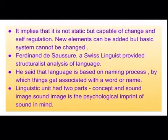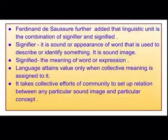He says that language is based on a naming process, by which things get associated with a word or name. A linguistic unit has two parts: concept and sound image. Sound image is the psychological imprint of the sound in our minds. The linguistic sign is the combination of signifier and signified. Sound image is the signifier and the concept is the signified. Language attains value only when collective meaning is assigned to signs. It takes a community to set up the relation between any particular sound image and any particular concept.